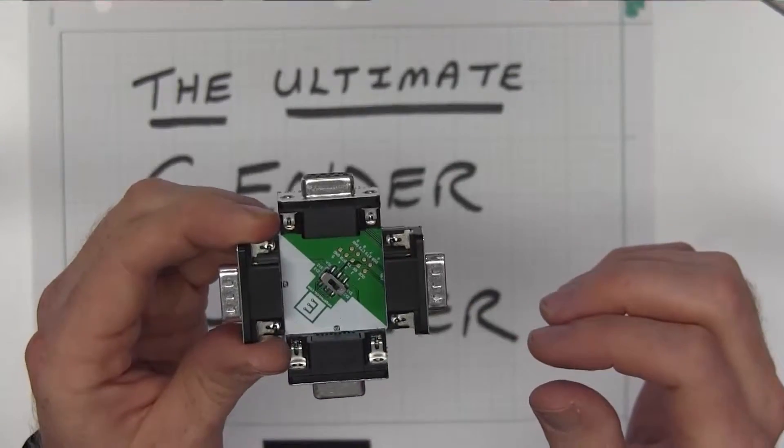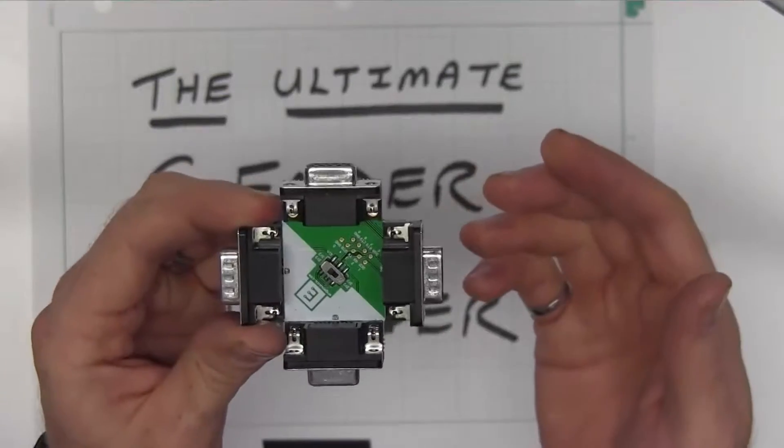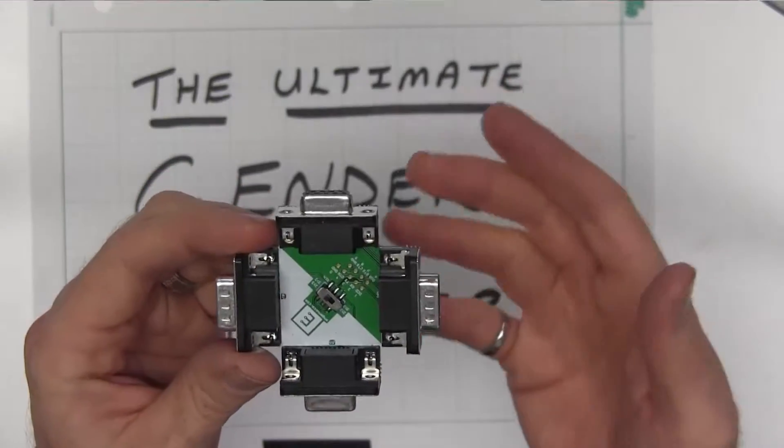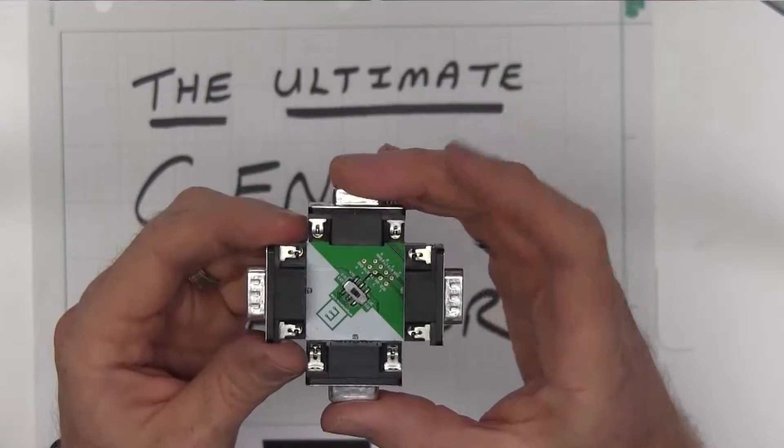So it's very easy. If you have a straight through cable and you actually need a null modem cable, well you can just run it through this and simply flick that switch.